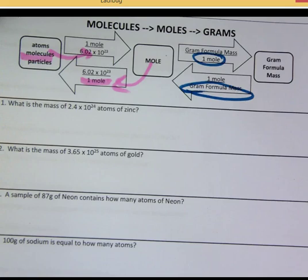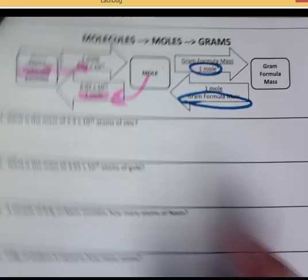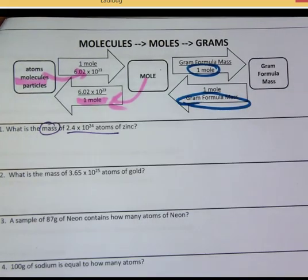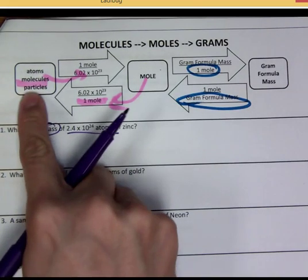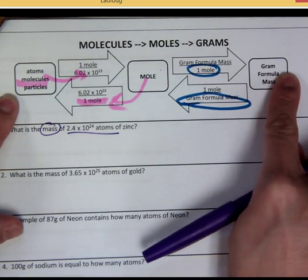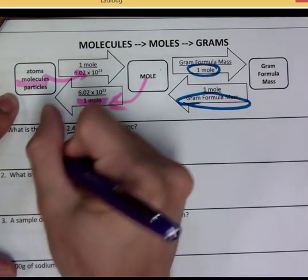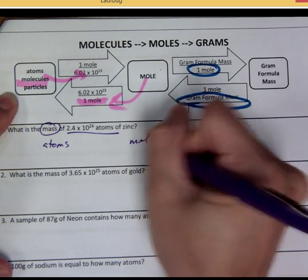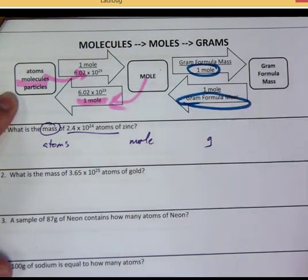So these involve two steps. So you're going to have what mass of atoms. So mass is the grams. Okay, we have atoms and we need to go all the way to grams. So we're going to get atoms. Mole, right? Mole is the middle step. And then grams is the last step.